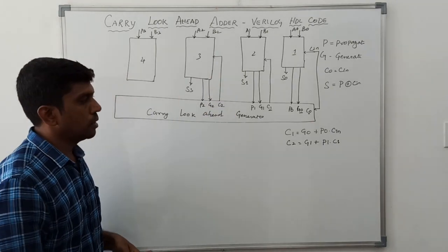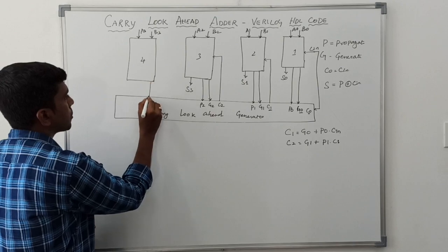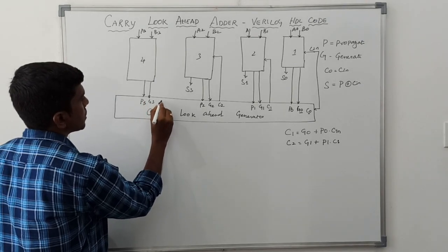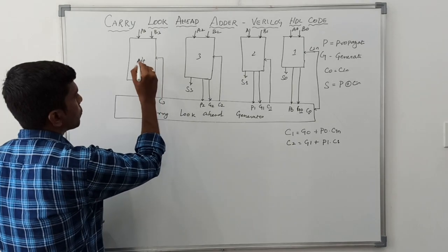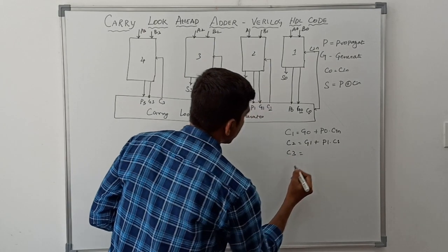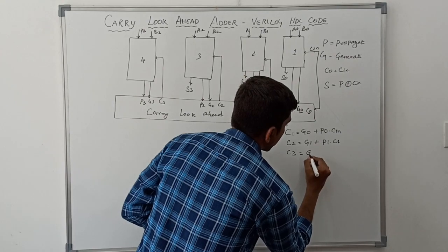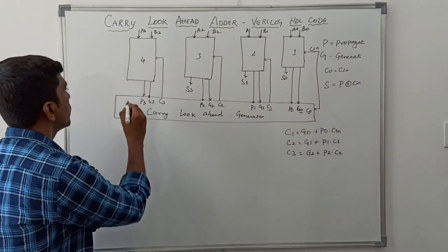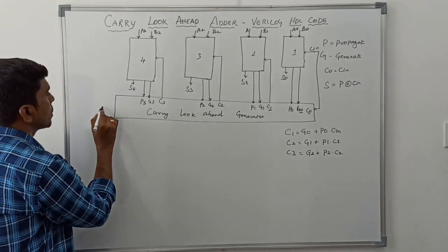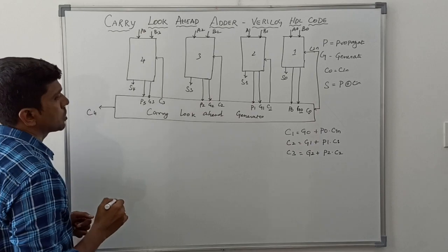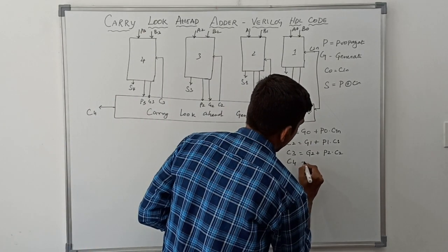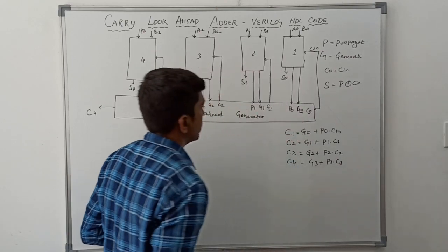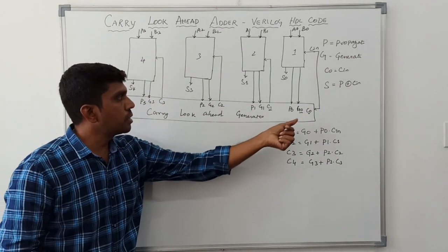After generating this carry, it is given to the next circuit. For the fourth adder circuit, the two inputs generate propagation signal P3 and generation signal G3. C3 is the carry input of the fourth adder. C3 = G2 + P2 · C2. The sum output is S3 and the final carry output is C4. C4 = G3 + P3 · C3.